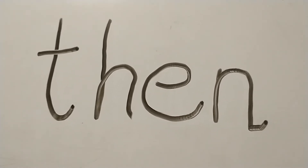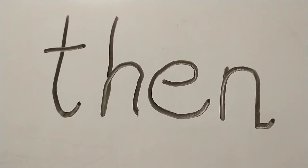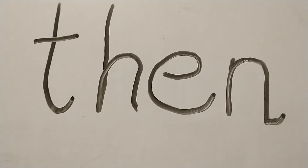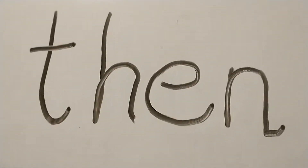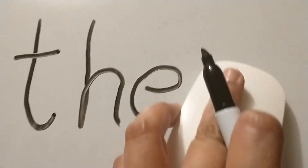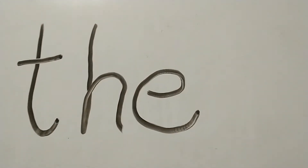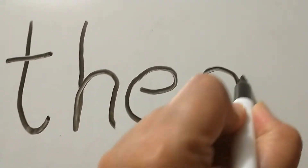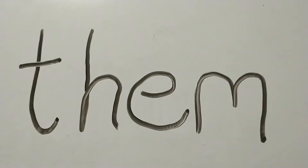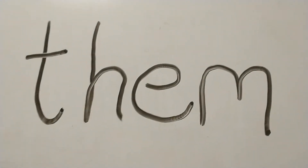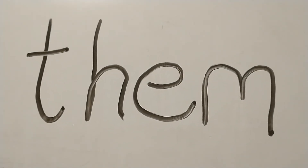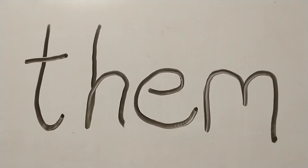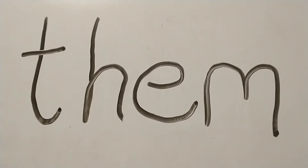Then what we're going to do is keep the TH in place and replace the letter N with an M, which makes TH-EM: THEM.